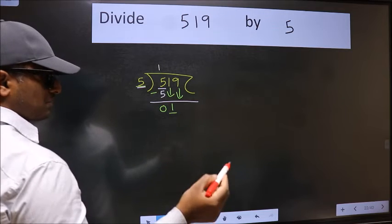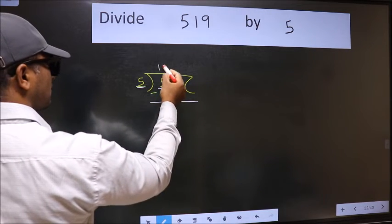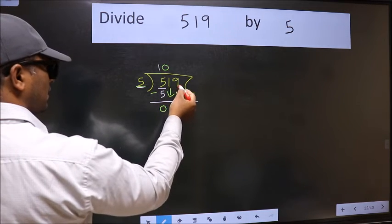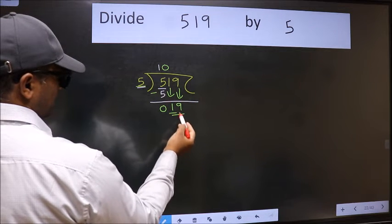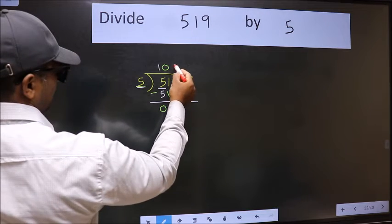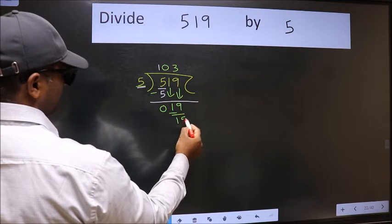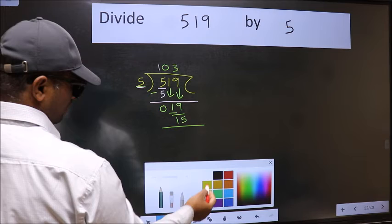And the rule to bring down the second number is we should put 0 here, then only we can bring this number down. Now 19, a number close to 19 in the 5 table is 5×3 is 15. Now we should subtract.